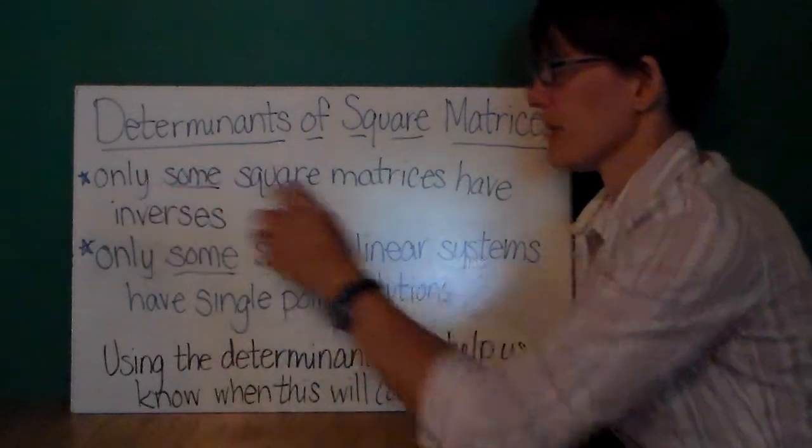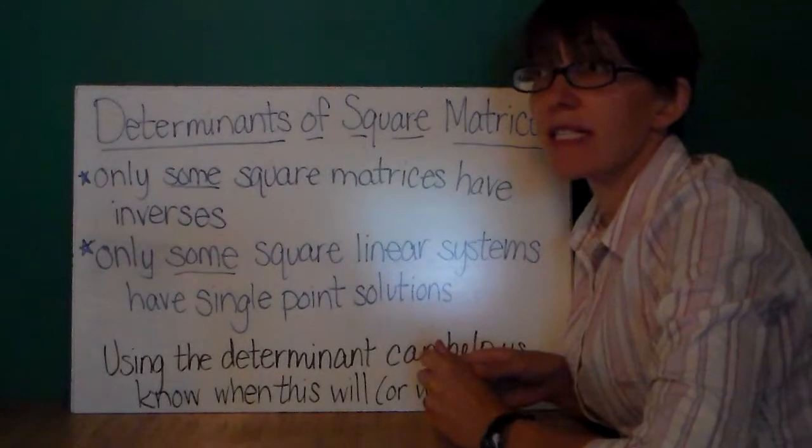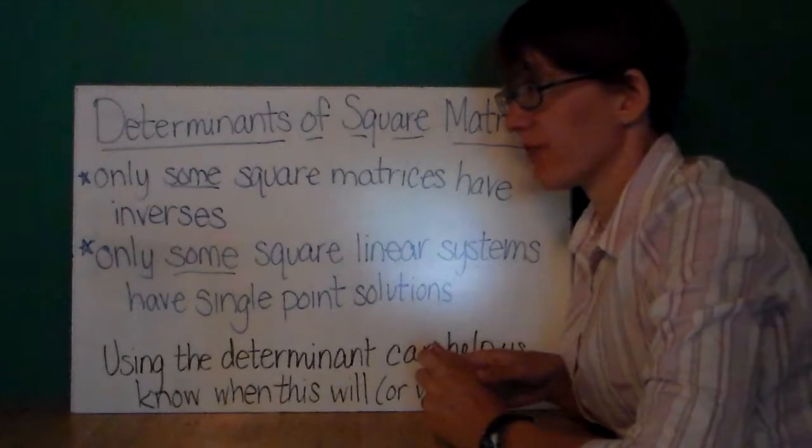Now, only some square matrices have inverses. Remember that no matrix that is non-square can have an inverse.